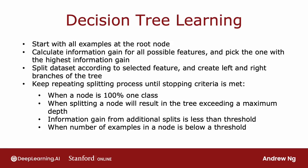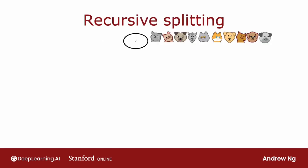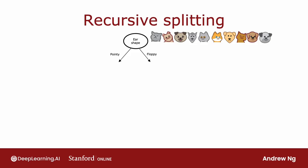Let's look at an illustration of how this process works. We start with all of the examples at the root node, and based on computing information gain for all three features, we decide that ear shape is the best feature to split on. Based on that, we create left and right sub-branches and send the subset of the data with pointy versus floppy ears to the left and right sub-branches.